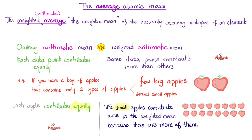When you get the weighted mean of all of the naturally occurring isotopes of an element — say hydrogen or carbon — and get their weighted mean, that's how you end up with a number that's not a whole number. The ordinary mean gives each data point an equal weight — each contributes equally. However, in the weighted mean, some data points contribute more than others. It's like George Orwell's Animal Farm: all animals are equal, but some are more equal than others.